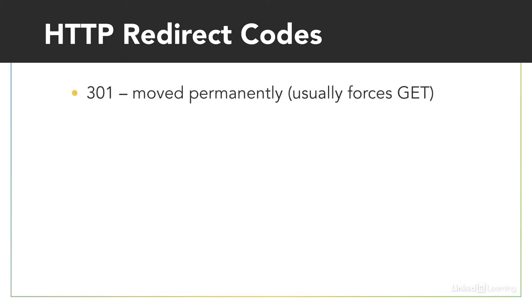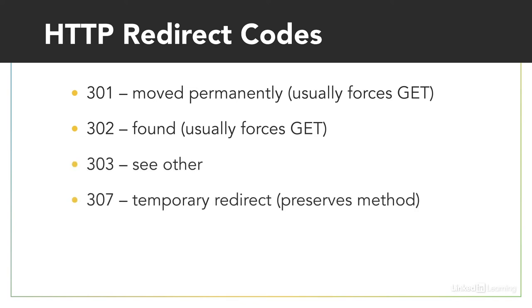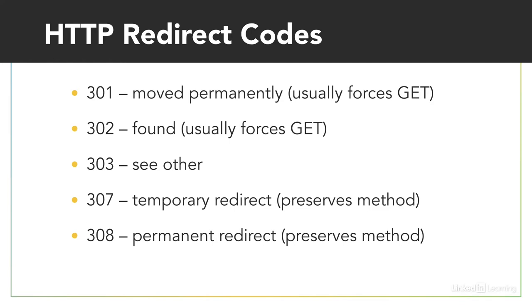The relevant codes are: 301, moved permanently; 302, found; 303, see other; 307, temporary redirect; and 308, permanent redirect. Why so many options? Because the web has evolved, and here again we find progressive enhancement at play. Let me break down when to use these codes with some scenarios.